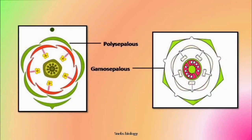In a floral diagram, a sepal is drawn with a pointed end. If we have to show that these sepals are free, then we don't join the ends. But if we have to show that these sepals are fused — that is, the condition is gamosepalous — then we make a loop-like structure. The first diagram represents free sepals and this loop-like structure represents fused sepals. This is how we draw a sepal in a floral diagram.